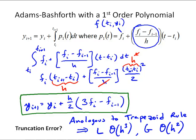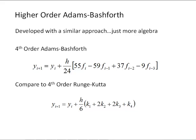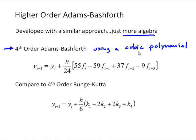We can keep developing higher-order Adams-Bashforth methods with the same approach — just more algebra. Here's the fourth-order Adams-Bashforth scheme derived using a cubic polynomial. Using a third-order polynomial gives a fourth-order accurate ODE solver. Since it's a cubic, we need four points, bringing in f_i, f_i-1, f_i-2, and f_i-3 in a linear combination.